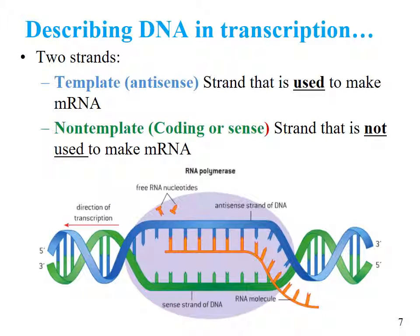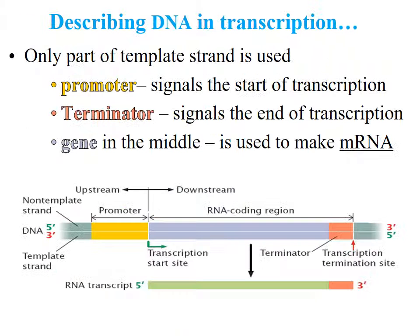When we talk about DNA in transcription, there are two strands: the template (or antisense) strand and the non-template (also called coding or sense) strand. The template strand is used to make the mRNA; the non-template strand is not. Only part of the template strand is used — unlike in DNA replication where the whole strand is copied. The promoter signals the start of transcription and the terminator signals the end, with the gene in between used to make mRNA.